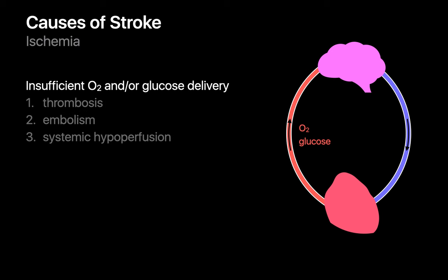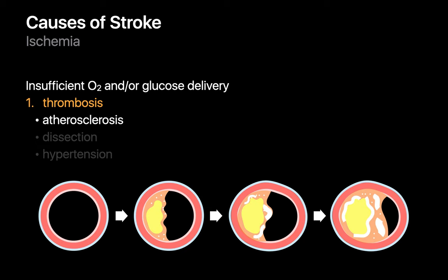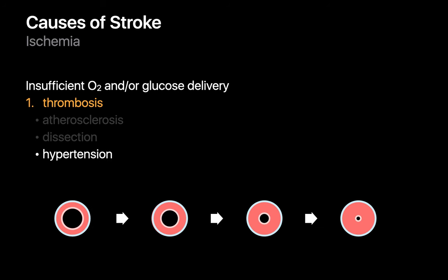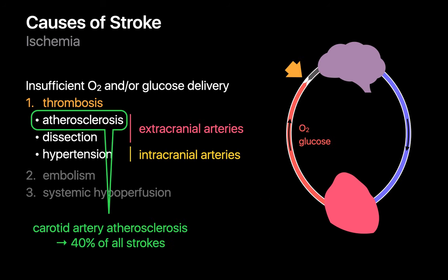There are three main reasons why oxygen or glucose delivery to the brain may be interrupted. A thrombus may have developed in an artery that obstructs blood flow to the brain. The thrombosis may have occurred because the vessel lumen was markedly narrowed by chronic atherosclerosis, a dissection, or long-standing hypertension. Thrombotic strokes due to atherosclerosis and dissection are usually traced to extracranial arteries, while those due to hypertension are usually traced to intracranial arteries.